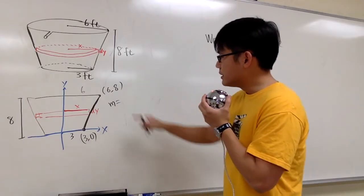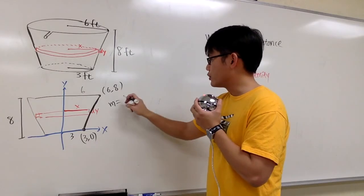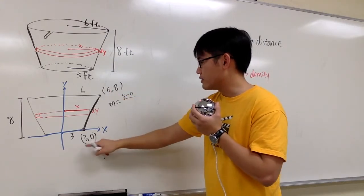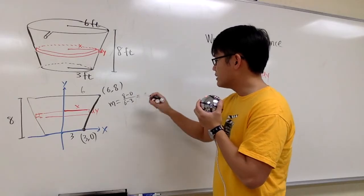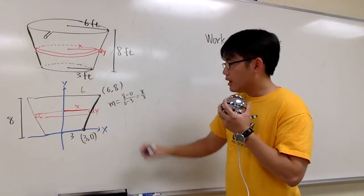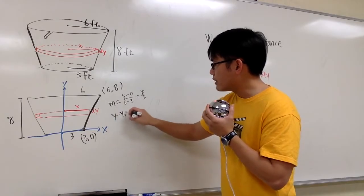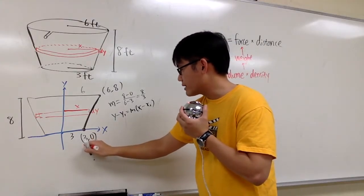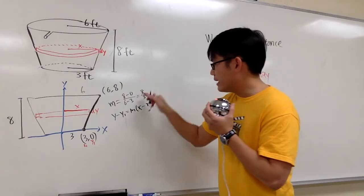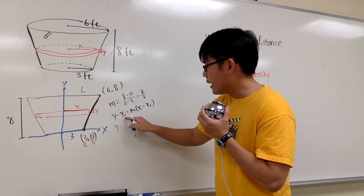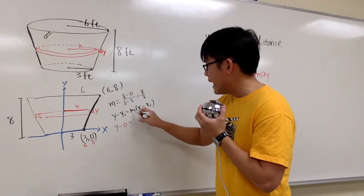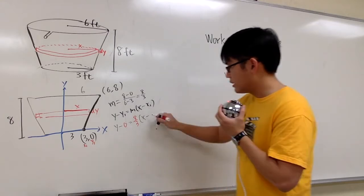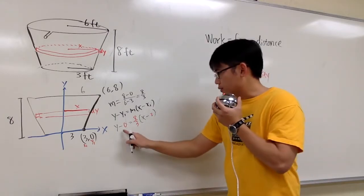Let's calculate the slope. The slope is y2 minus y1, so I'll do 8 minus 0, over x2 minus x1, 6 minus 3. Work this out, we get 8 over 3. Then I'm going to use the formula y minus y1 equals m times x minus x1. Let me use this for the x1, y1, and the m is that. So I know that y minus y1, which is 0, will be m, which is 8 over 3, times x minus x1, which is 3.